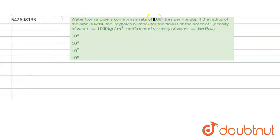from a pipe is coming at a rate of 100 liters per minute. If the radius of the pipe is 5 centimeters, the Reynolds number for which the flow is of the order is what? We are given the density of water is 1000 kg per meter cube and the coefficient of viscosity of water is 1 millipascal second. So let's understand the concept.